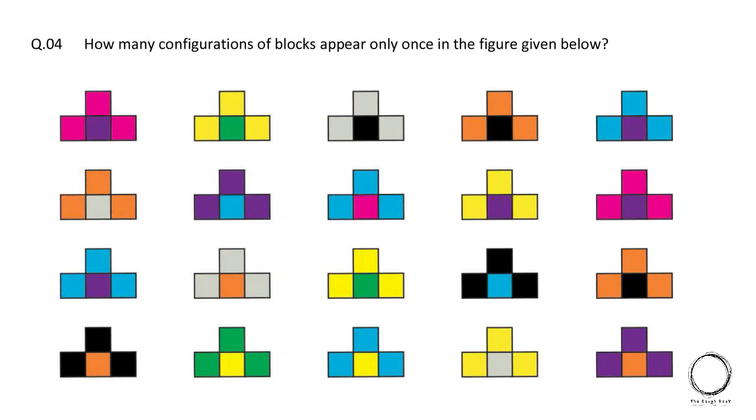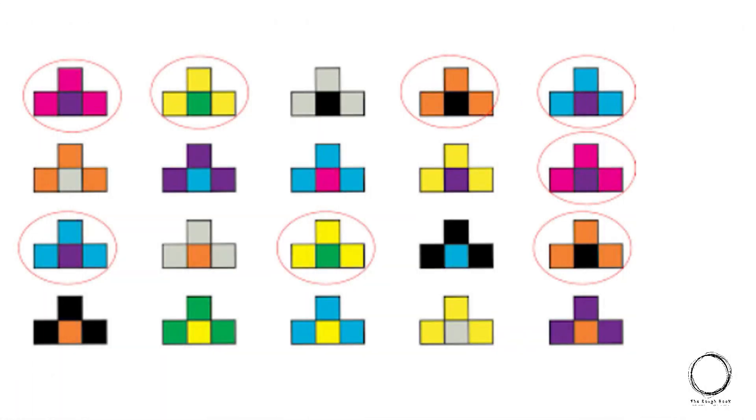Next question. How many configurations of blocks appear only once in the figure given below? So here is an image where the configurations appearing twice are marked. Hence, the unmarked are the answer, that is 12.